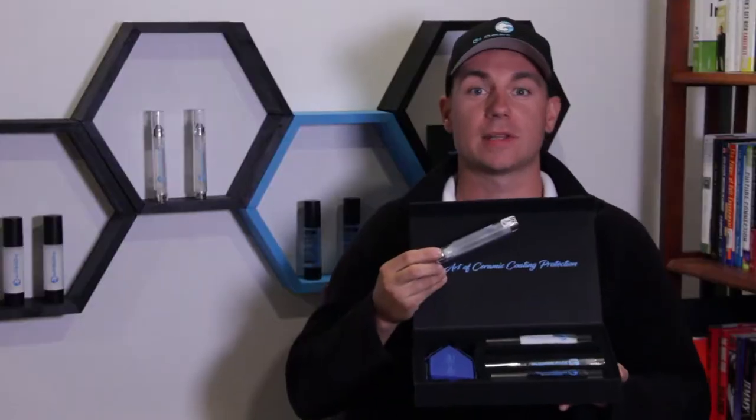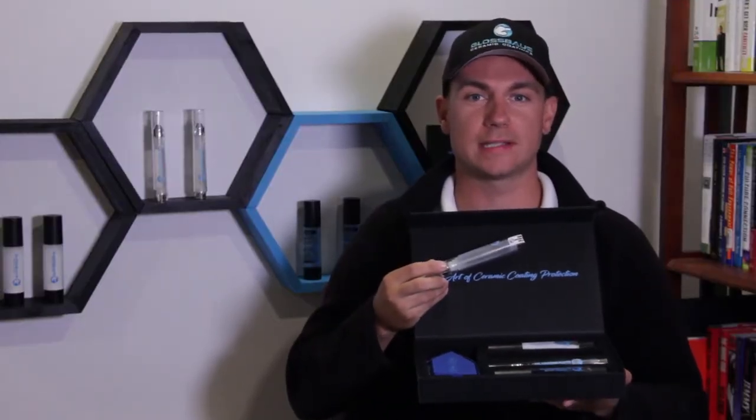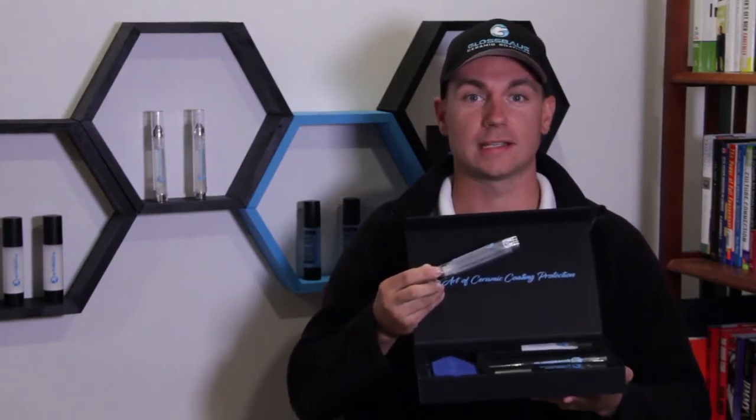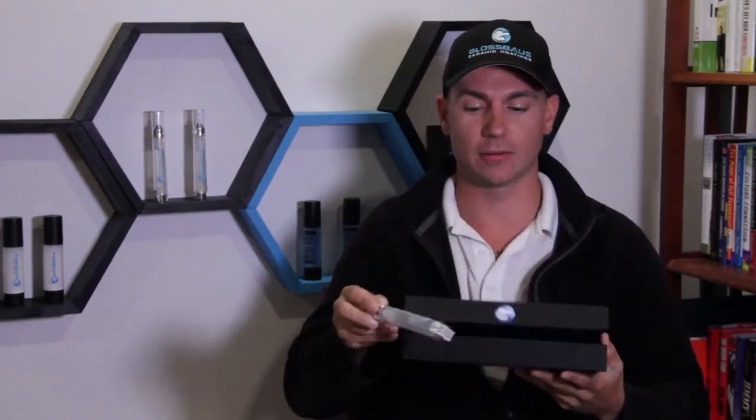The kit comes with everything you need to coat a mid-size vehicle with two coats of base coat ceramic and one coat of top coat, the SiO2 skin top coat.